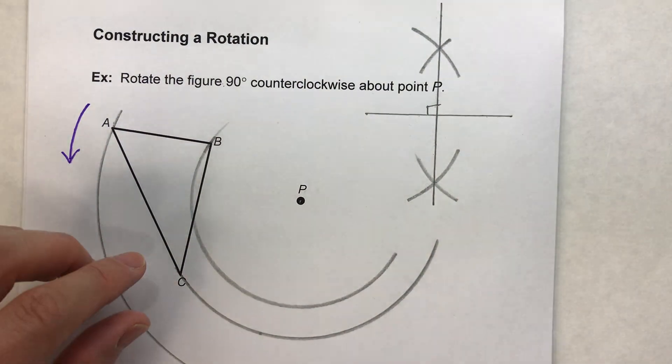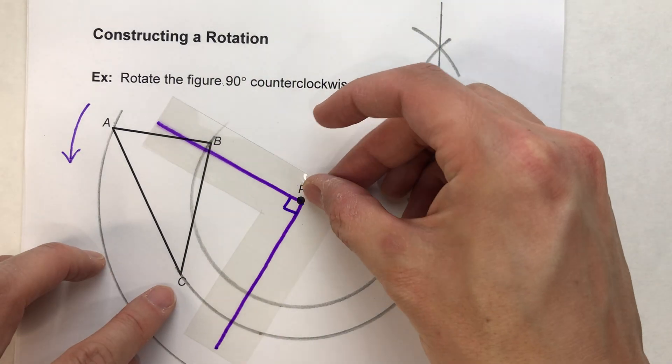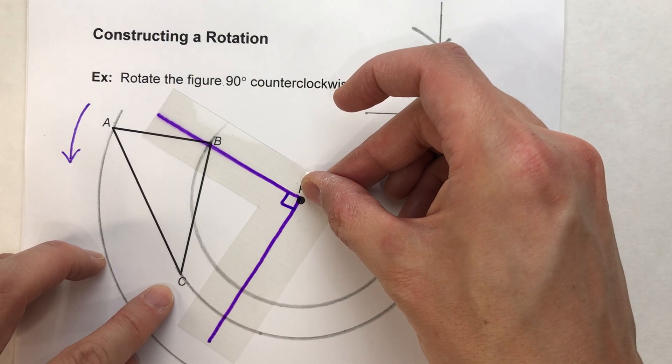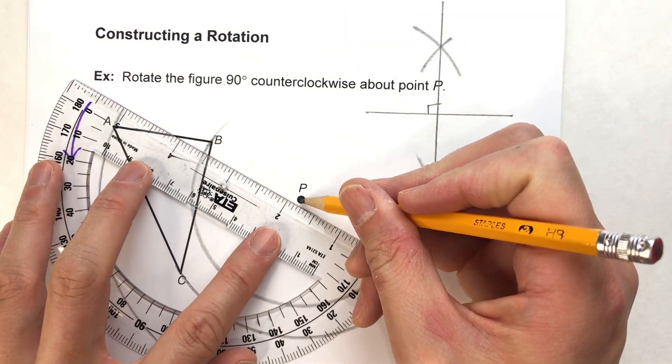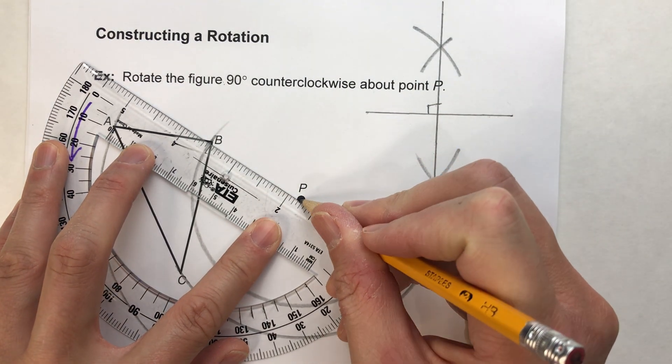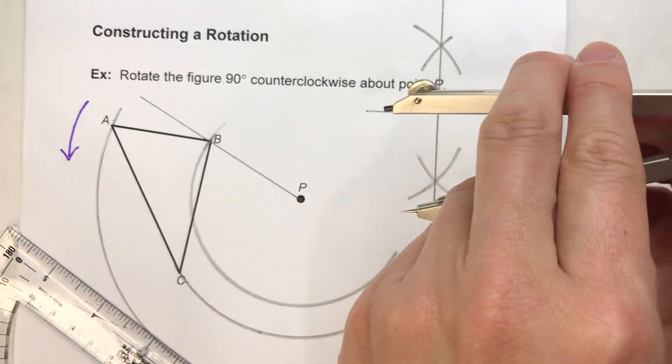So what we're going to do is take this angle here and duplicate it right here so that we know where B ends. So here's P to B.